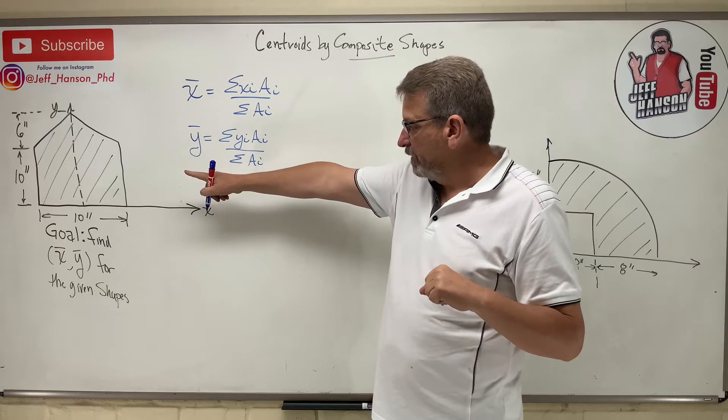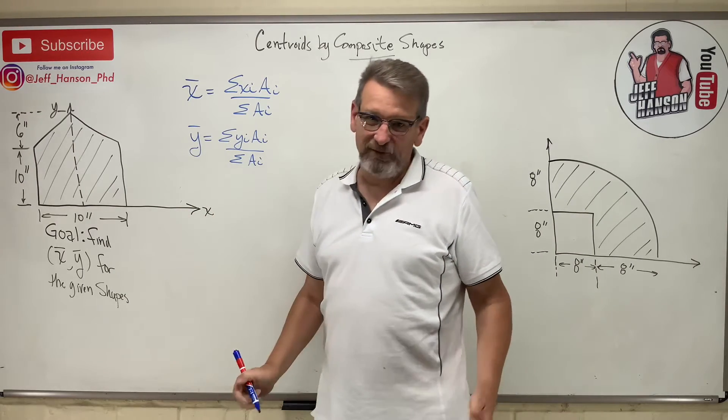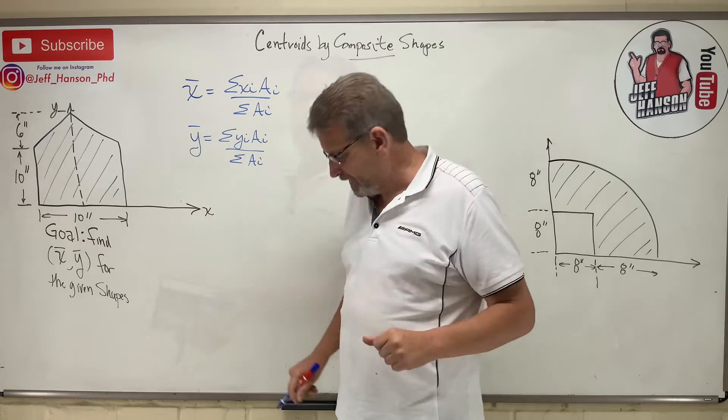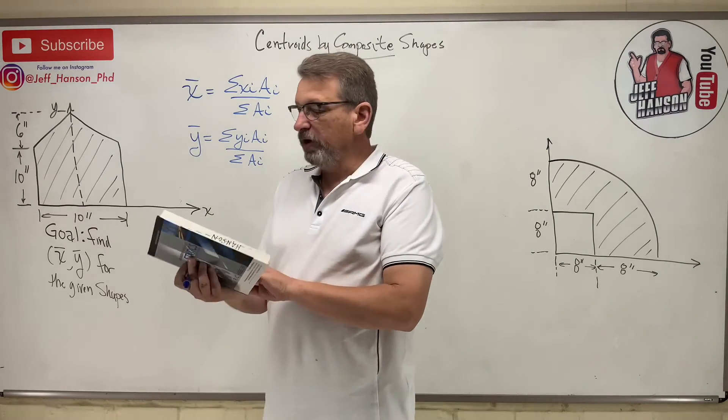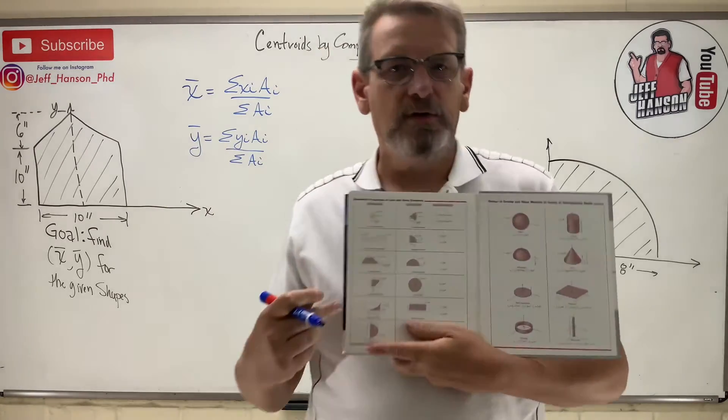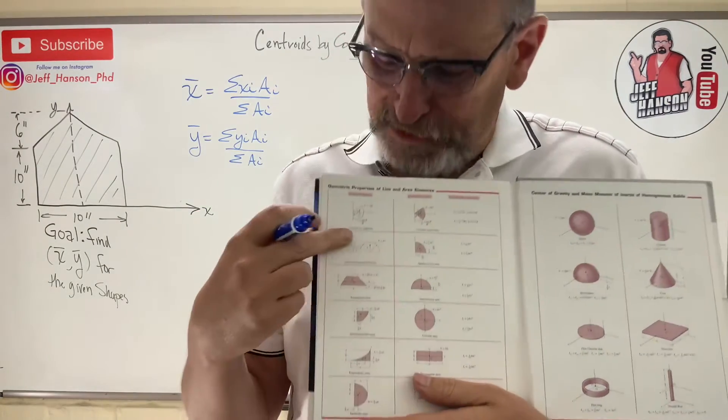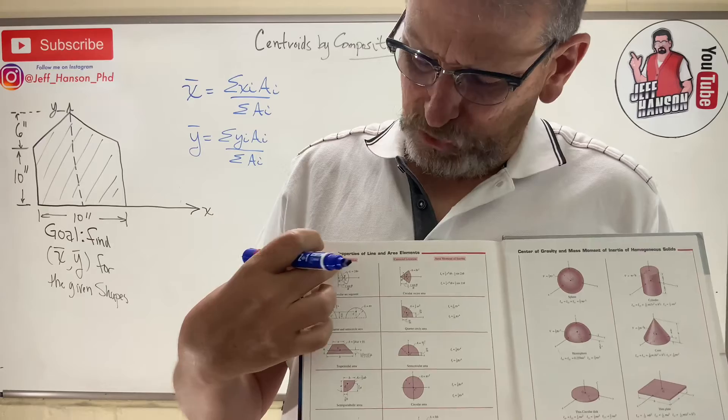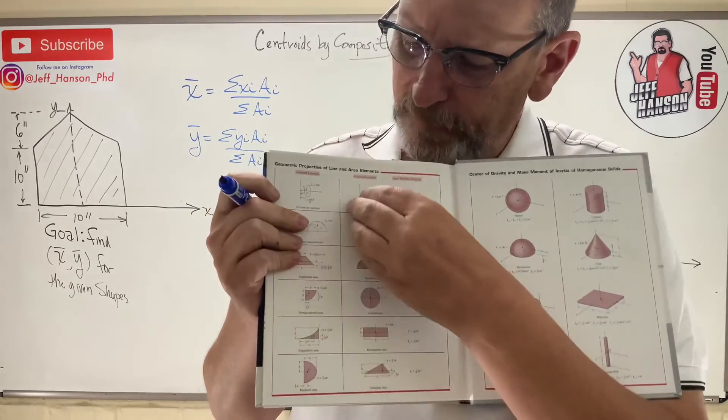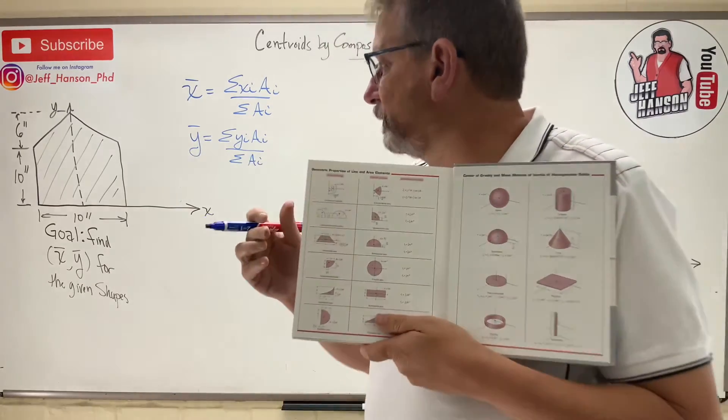Let's start with this guy over here. For both problems, we're going to find x-bar and y-bar for the given shapes. So we'll start with this guy and we're going to need our textbook. We're going to flip to the very back cover. This is the centroid table, the composite shape table. It's the geometric property of line and area elements. This is what you need for this particular part.